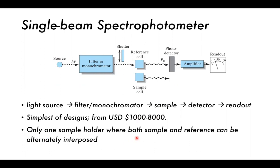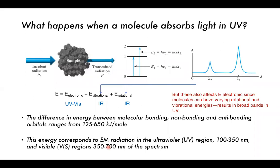Only one sample holder may be present, where both sample and reference can be alternatively interposed — basically swap one out for the other. Whenever we're doing this, we have the molecule absorb some light. We have incident radiation P0 incident on our sample, and then transmitted radiation which should hopefully be lower in intensity. The sample is going from a ground state — low energy, its normal resting position — up to an excited state upon absorbance of the correct wavelengths of light.